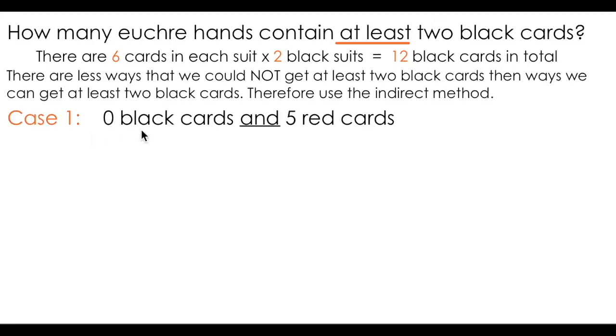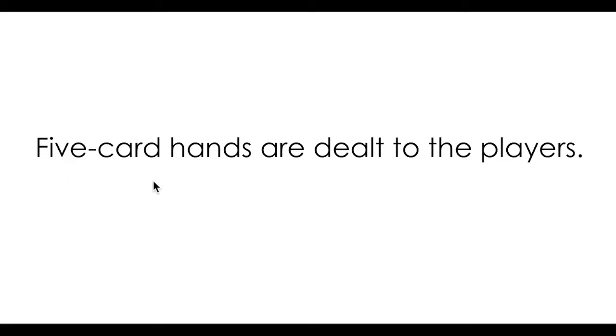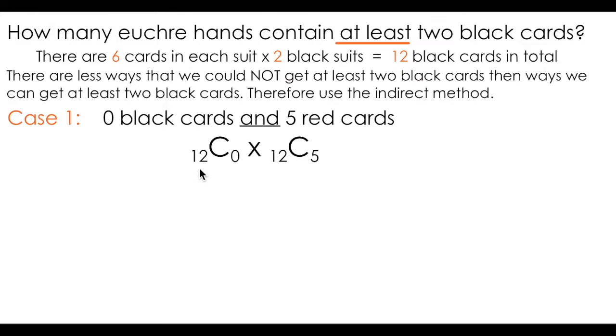So the first case is when I get zero black cards and five red cards. I know there are twelve possible black cards. I'm choosing zero, which means I must have five red cards chosen from the remaining cards in the deck, which must all be red. A good way to check that you're on the right track here is by adding the first number in front of each of your choose expressions. 12 plus 12 equals 24, which is the total number of cards available. We can also add the second numbers, zero plus five, to check that we are in fact choosing five cards.